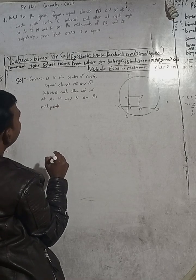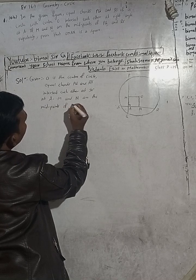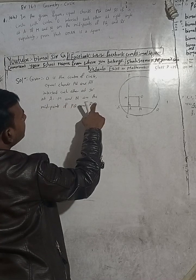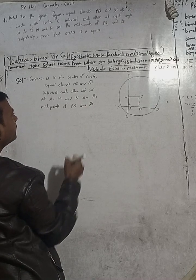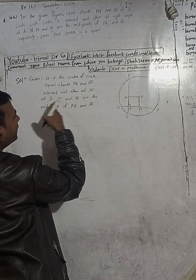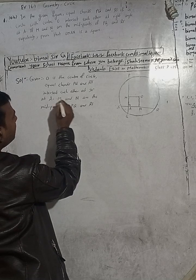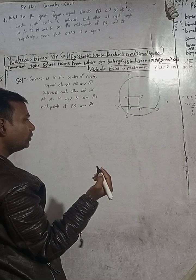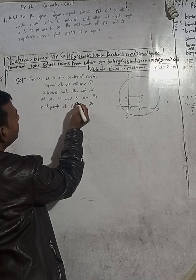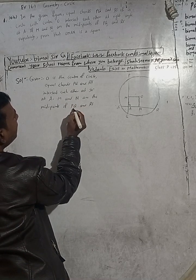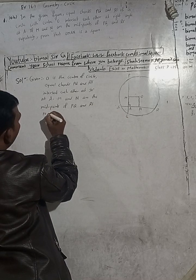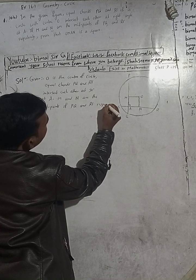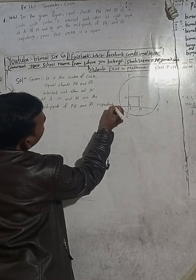Also given: M and N are the midpoints of PQ and RS respectively.